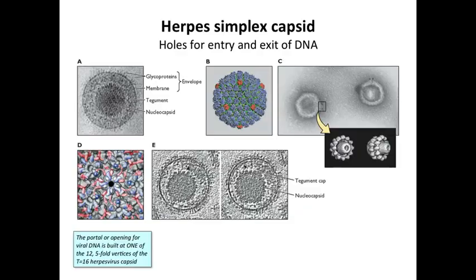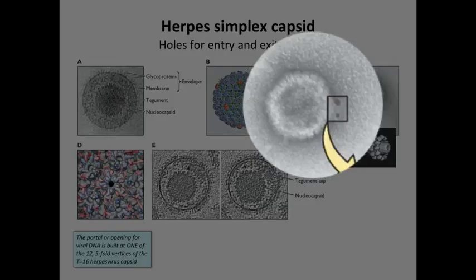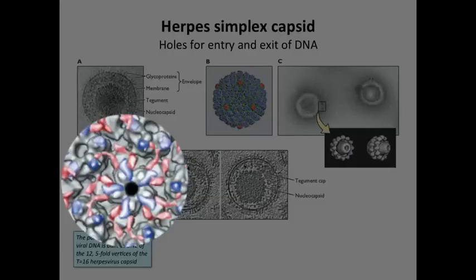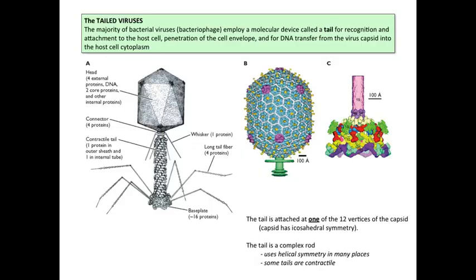Herpes virus is a very interesting particle because it's built with icosahedral symmetry, and in an icosahedral structure there are fivefold axes of symmetry — in theory, they're all the same environment. But on the herpes capsid, one of them is different. One of the 12 fivefold axes has what's called a portal — it's an opening — and none of the other fivefold axes have that. You can see it in this electron micrograph and reconstruction. It's believed that this is how you put DNA into the capsid and perhaps get it out. So an interesting spin on icosahedral symmetry is to make this one asymmetrical portal.